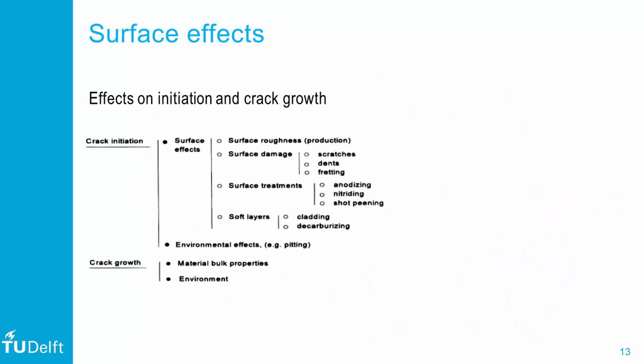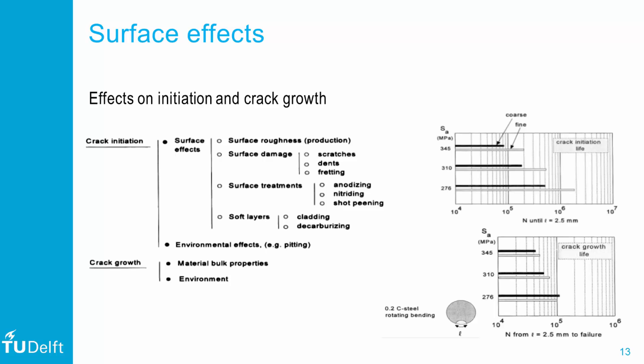Because the initiation phase is dominated by surface conditions, surface aspects are very important for that phase. The surface conditions, and what the environment does to the surface, directly influence the initiation phase. The growth phase is dominated by bulk material resistance and to a much lesser extent by the environment. Data on the right-hand side supports this: two different surface roughness conditions — smooth and coarse — result in distinct initiation lives, while the crack growth lives are almost identical.